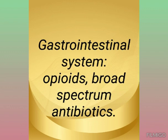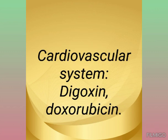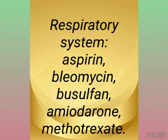The fifth one is the gastrointestinal system, affected by opioids and broad-spectrum antibiotics — broad-spectrum antibiotics affecting the gastrointestinal system is very important. The sixth is the cardiovascular system, affected by digoxin and doxorubicin.